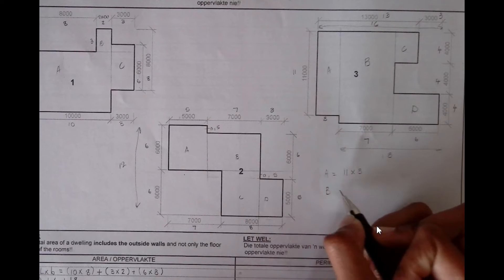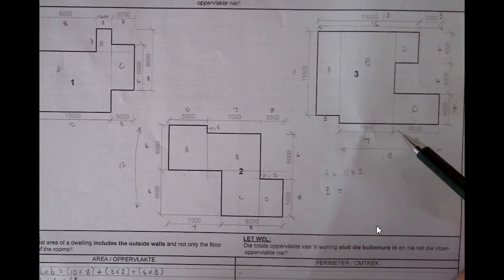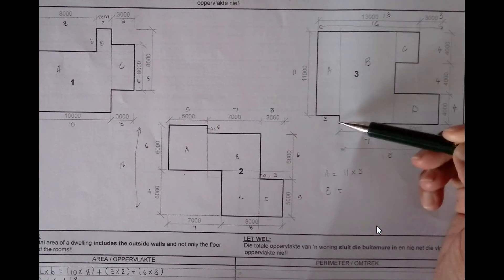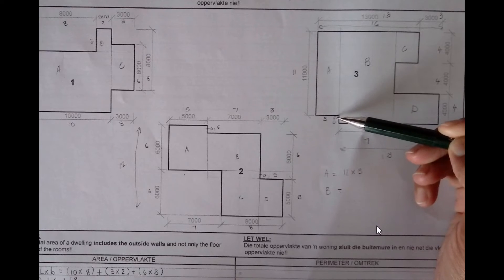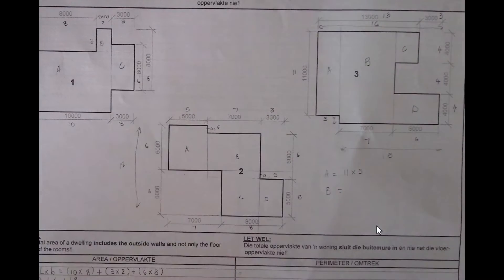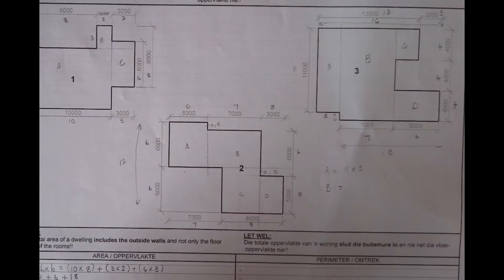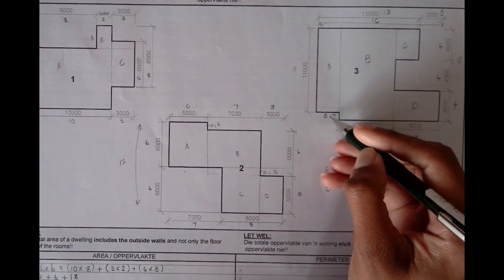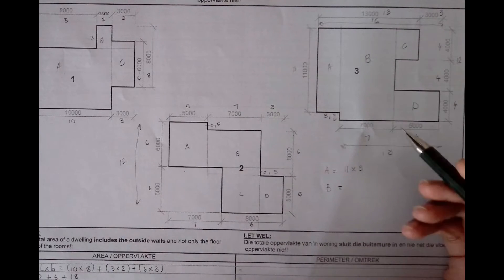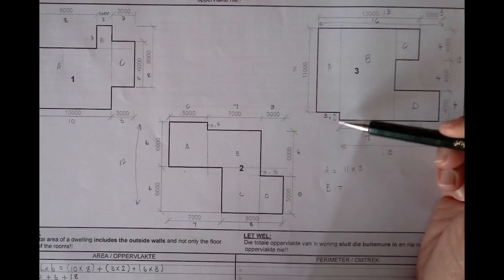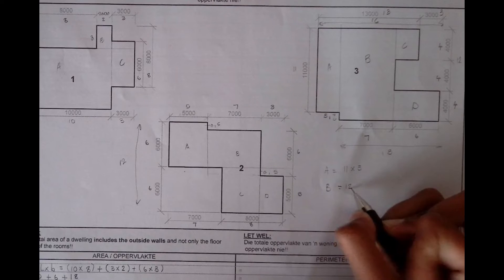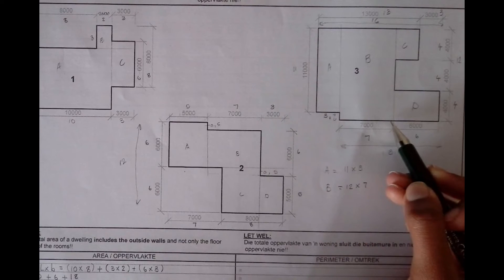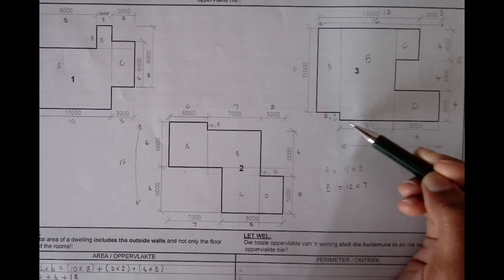For B, we need to figure out how long that whole line is. The total of 4 plus 8 gives 12. We already know from here to here is 11, making this part 1 — which is 1,000 millimeters. So the whole part is 12, making rectangle B: 12 by 7.